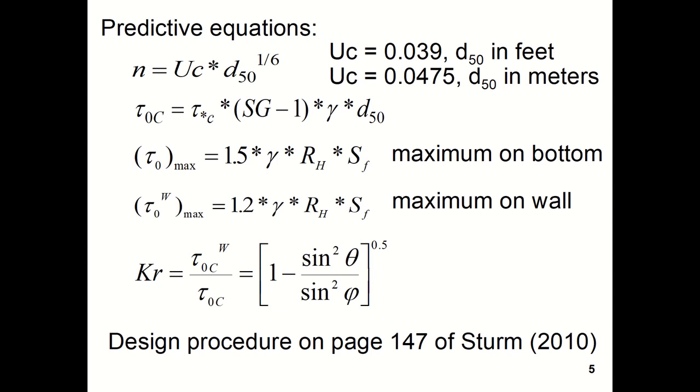Rh is equal to the hydraulic radius, Sf is the friction slope. The predictive equations that are utilized in the Tractive Force Method: you'll notice first there's a predictive equation for Manning's n based on D₅₀.